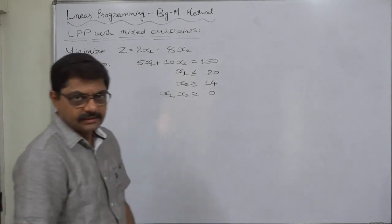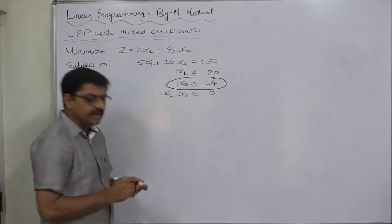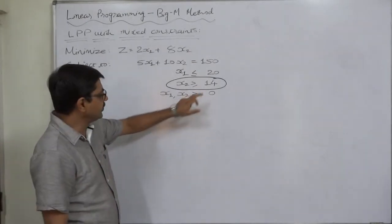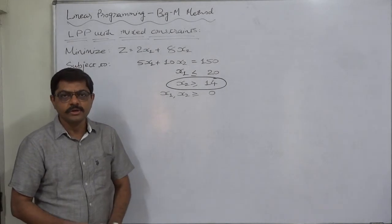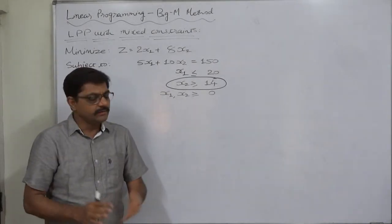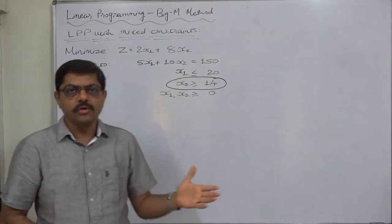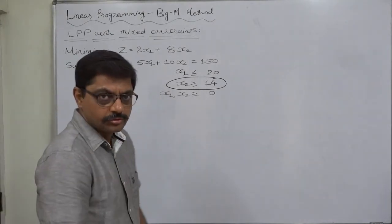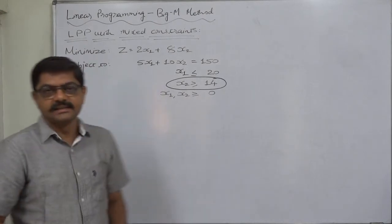We have a constraint with a single variable and a greater-than-or-equal-to sign. Whenever we have a constraint with a single variable and a greater-than-or-equal-to sign, we can remove that constraint and simplify the problem to a lower level. Reducing the number of constraints reduces the number of rows in the simplex table, which reduces the number of iterations needed to reach the optimal solution. So if we can reduce constraints, we should.